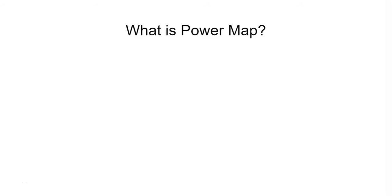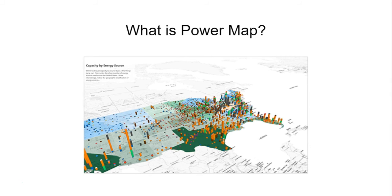What is the Power Map? Power Map is a 3D visualization tool for Excel that provides an immersive experience for making discoveries in data that might never be seen in traditional 2D tables and charts. Power Map lets you plot geographic and temporal data visually, analyze the data in 3D, and create cinematic tours to share with others.